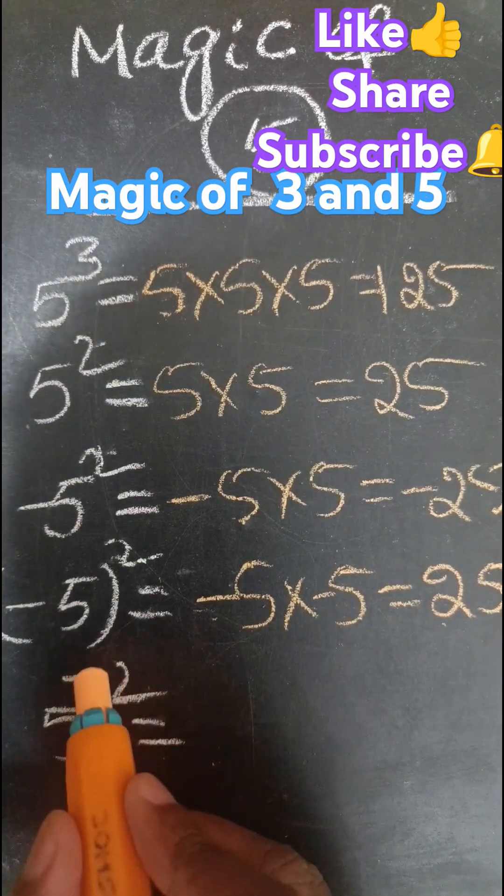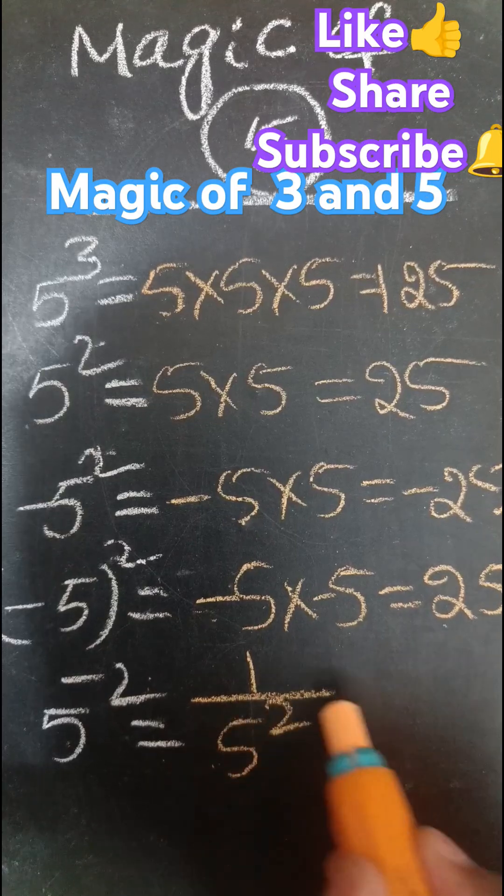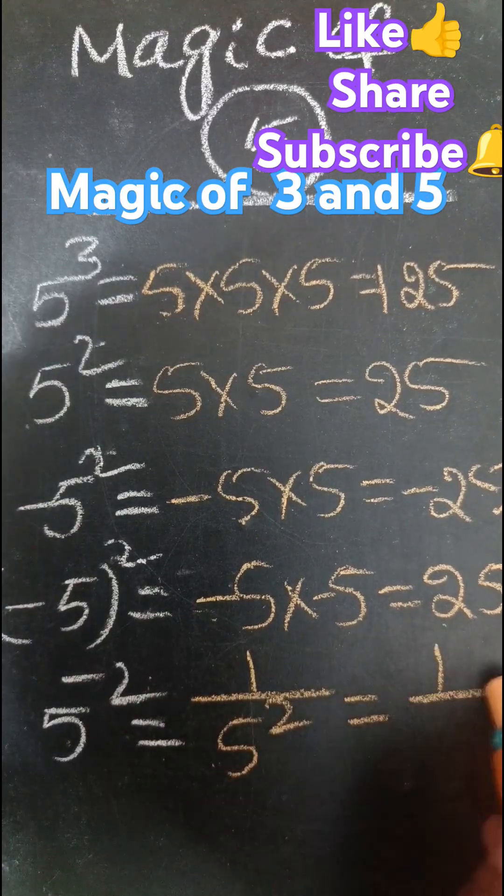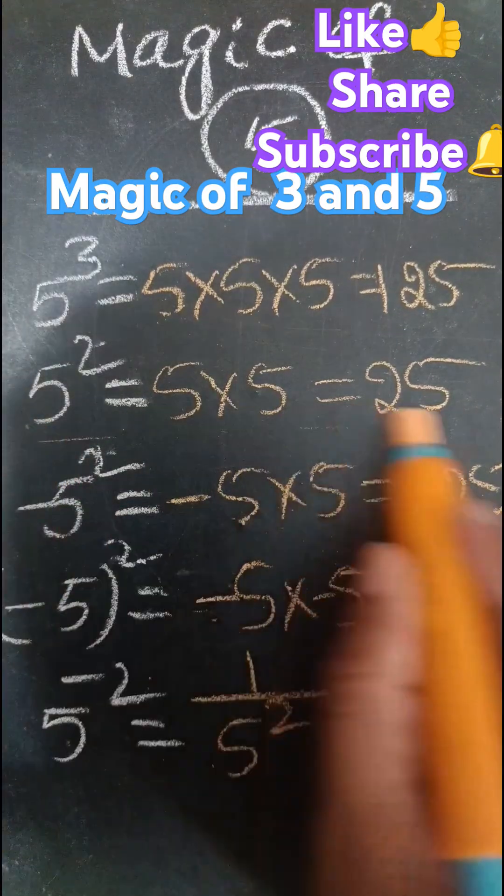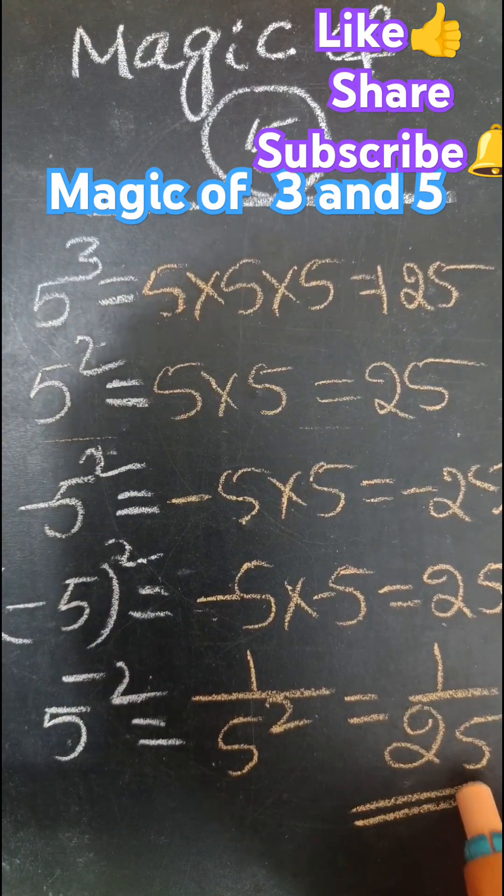Minus 5, minus 1 by 5 square. 1 by 5 square, 25. This is the magic of 5.